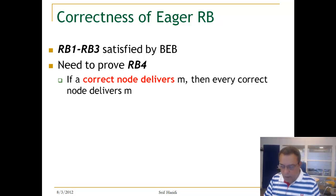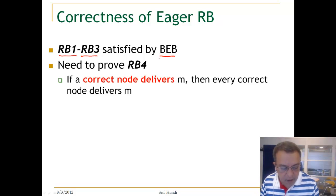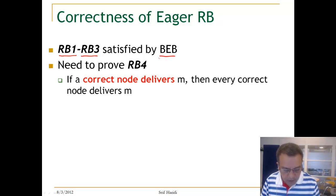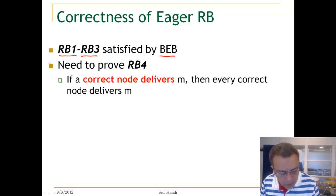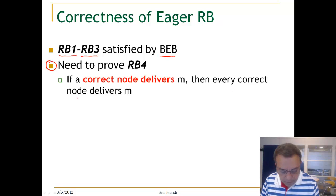Now let us look at the correctness of the algorithm. The reliable broadcast properties RB1 to RB3 are satisfied by BEP — these are validity, no duplication, and no creation. We want only to look at proving property RB4, which has to do with agreement. It says: if a correct node delivers M, then every correct node delivers M. This is what we want to show.